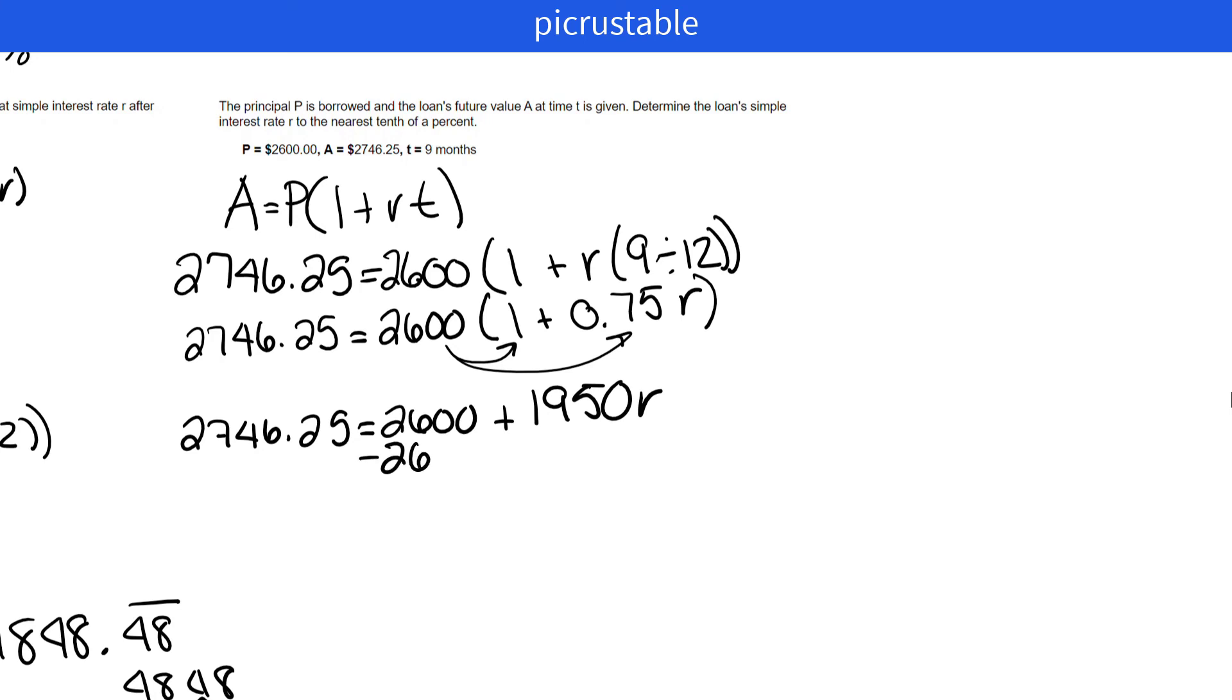We are now going to solve for R. So we have to do some algebra here. So we're going to subtract 2,600. So we end up with $146.25 equals 1,950R. We're going to divide by 1,950.